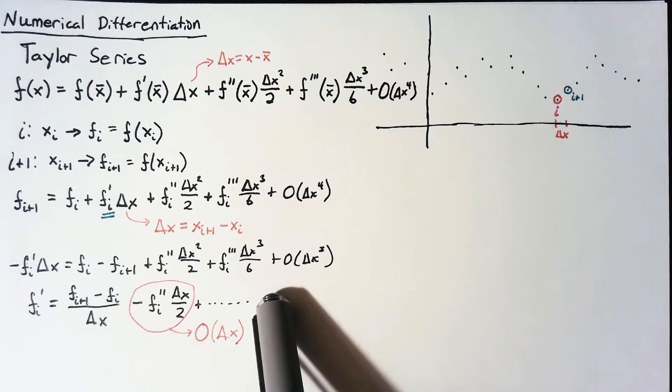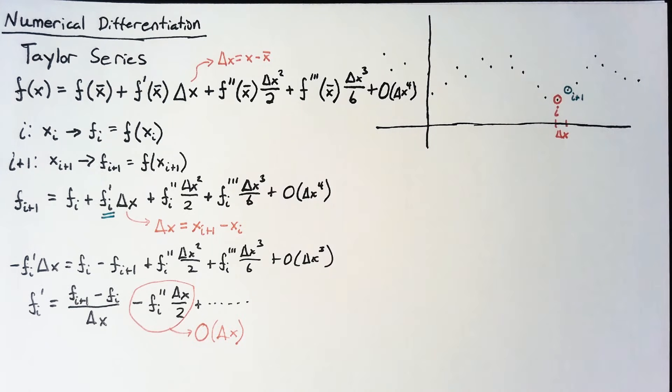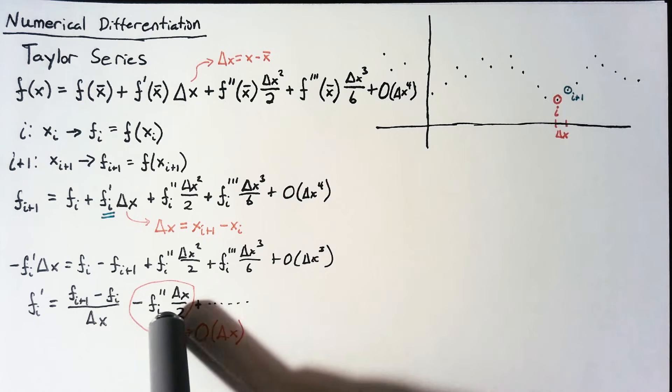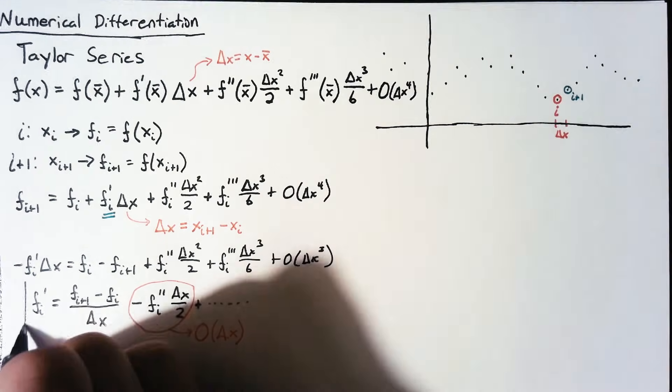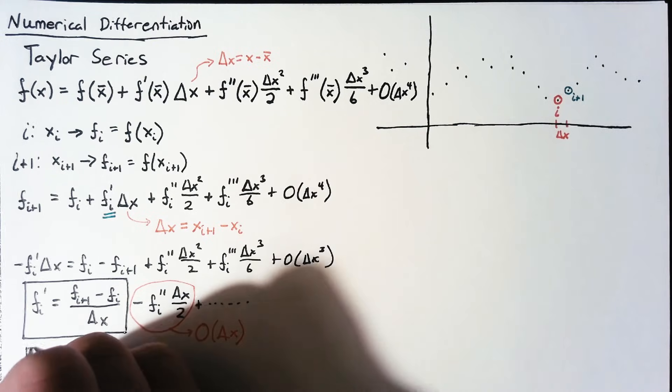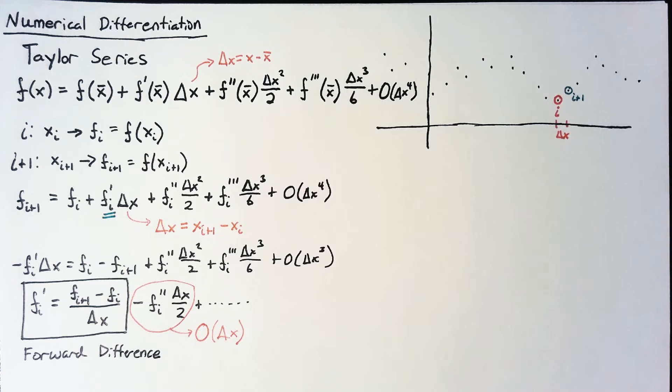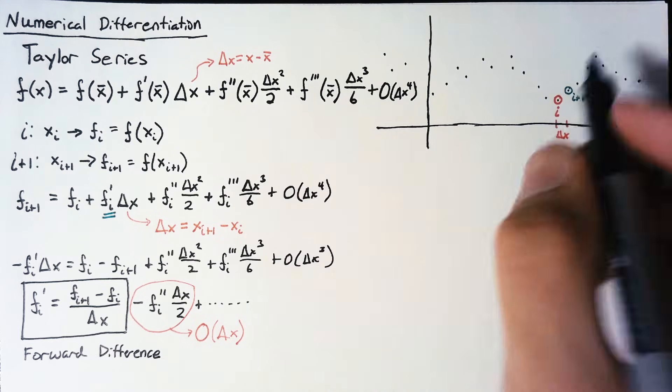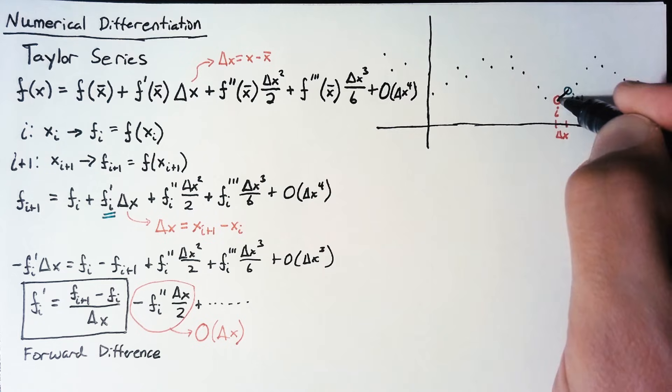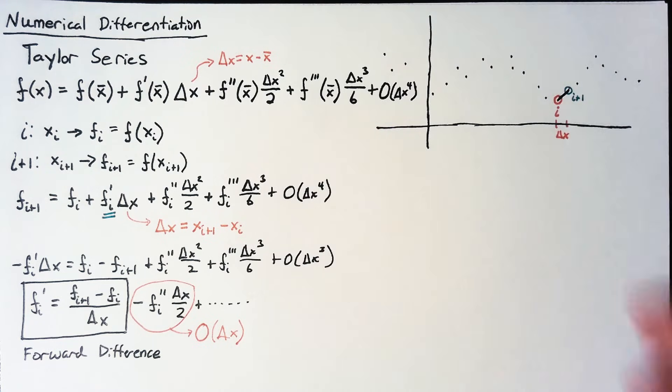So we have additional error terms on here as well based on the other derivatives, but they're all of higher order, meaning that they're at least delta x squared. So if we're able to decrease delta x, for instance, then those should disappear faster than this error. This first little bit here is what we call a forward difference. And essentially what we're doing with that is we're just connecting a line between these two points and calculating the derivative based on the slope of that line.